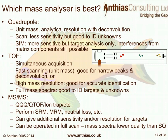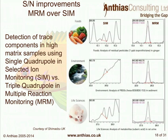Comparing MRM (multiple reaction monitoring) on a triple quadrupole versus selected ion monitoring (SIM) on a single quadrupole: in a food sample example, the SIM peak is quite difficult to identify and quantify due to co-eluting matrix peaks at the same masses. With MRM on a triple quad, the picture is much cleaner, giving much more confidence that the peak is the target analyte of interest.